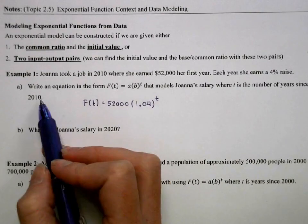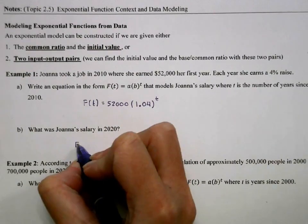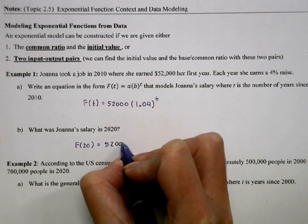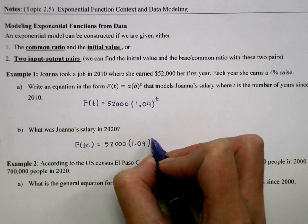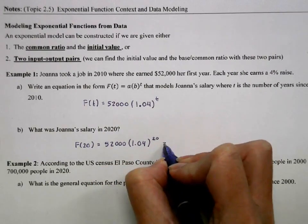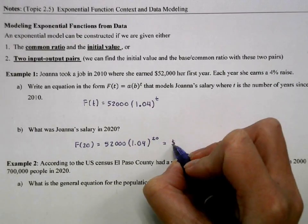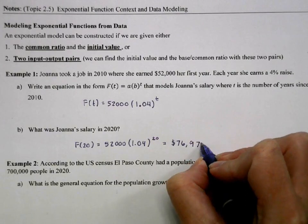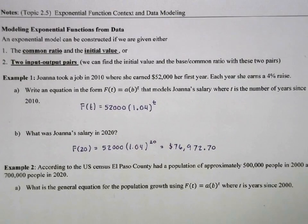Then if I plug in, if this is from 2010, to get our salary in 2020, we're going to plug in 20 into our equation. Which, obviously, you type that into the calculator. We get $76,972.70 is her salary in 2020.